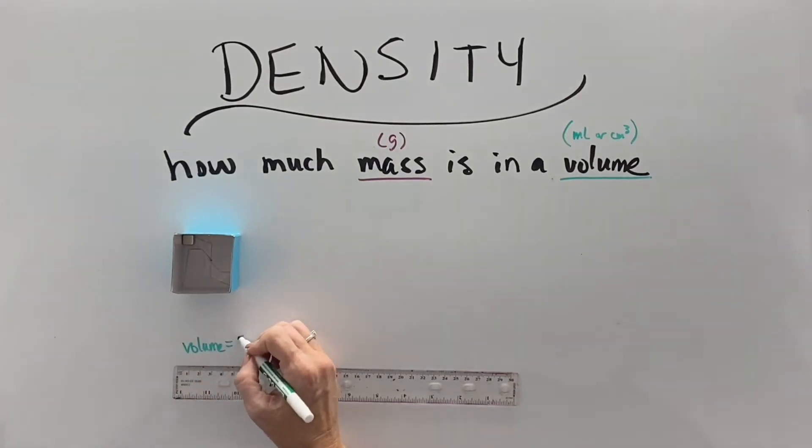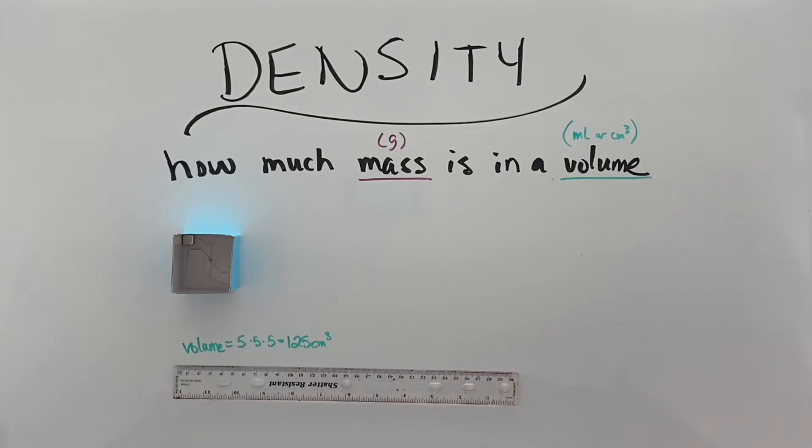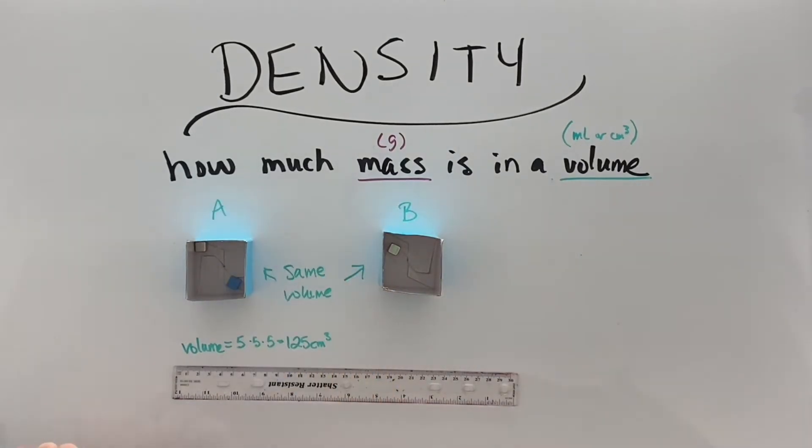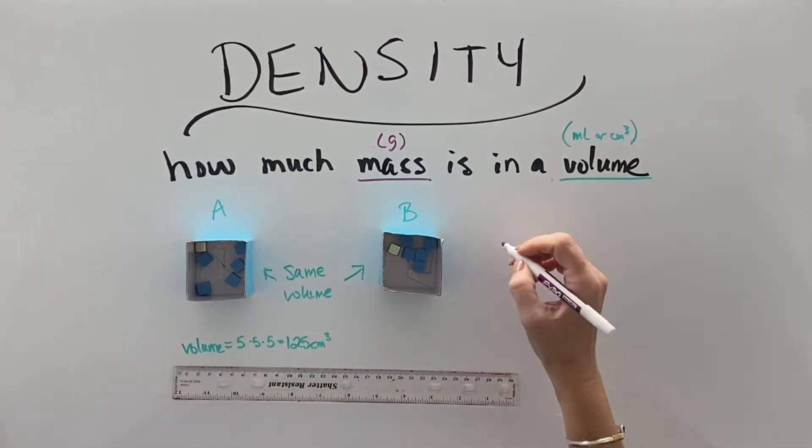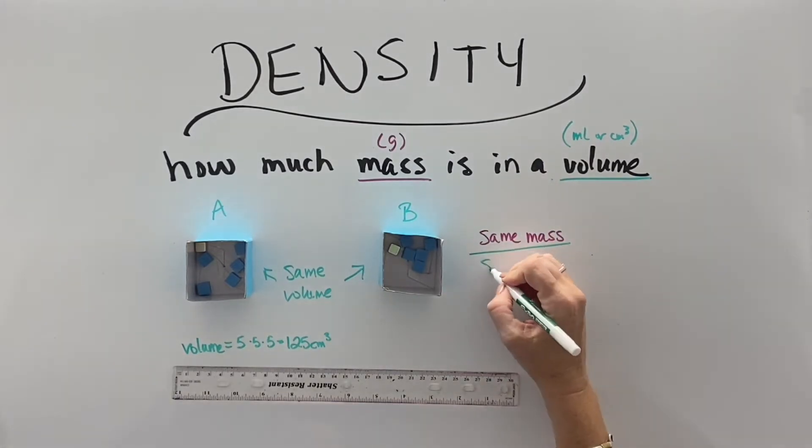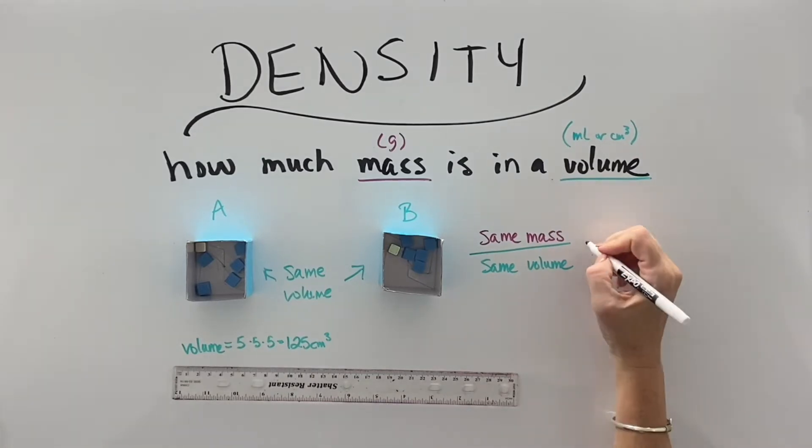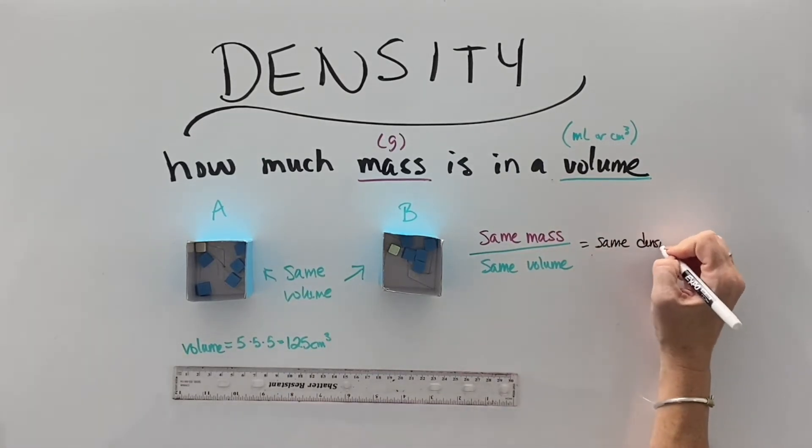Here I have a box with five-centimeter sides, and so five times five times five is 125, and here I have its twin. They have the same volume, and I'm going to add five grams in each, and so each box has the same volume and the same mass, and so because they have the same amount of mass in the same space, we say that they have the same density.